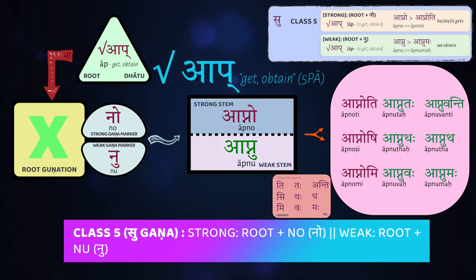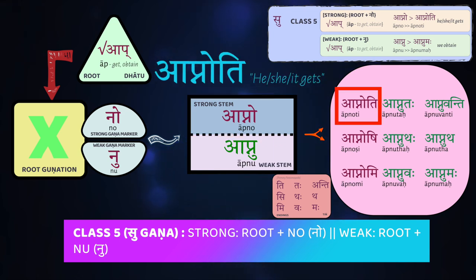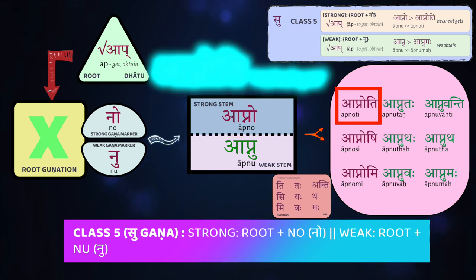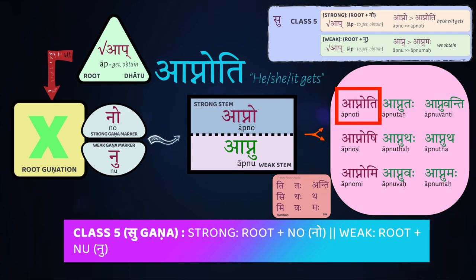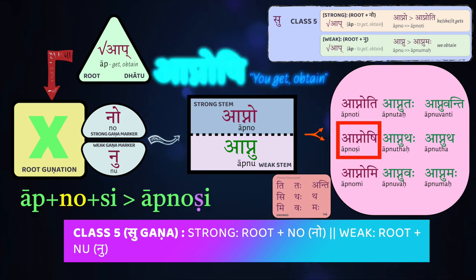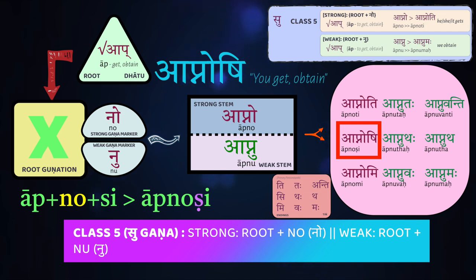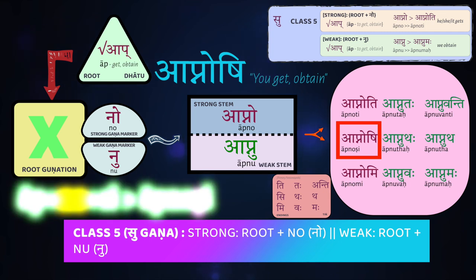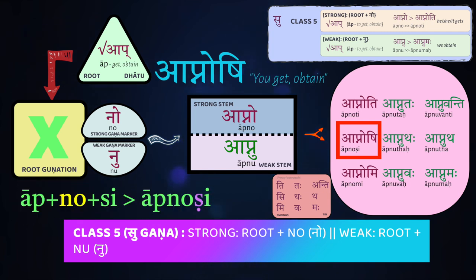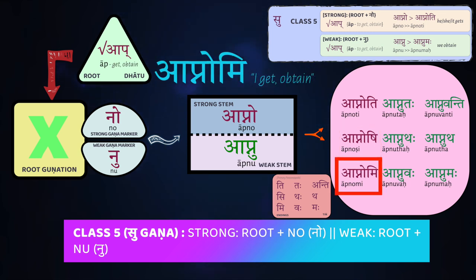And that's it — now you add your endings, using the strong stem for the three singulars in the parasmaipada. For third person singular, you'll have āp-no-ti (he/she/it gets). Second person singular, you will have āp-no-ṣi (you obtain). Notice again our internal s-sandhi rule is triggered because of the vowel o, which forces the s to become a retroflex. The last of the strong forms is the first person singular: aham āp-no-mi (I receive, I get, I obtain).